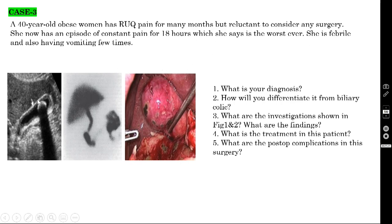On ultrasound, you are seeing the gallstone with posterior acoustic shadow. There is thickening of the gallbladder wall of more than 4 mm, and you can also see pericholecystic fluid collection. In biliary colic, you would see the gallstone and posterior acoustic shadow, but there would be no gallbladder wall thickening or pericholecystic fluid collection.